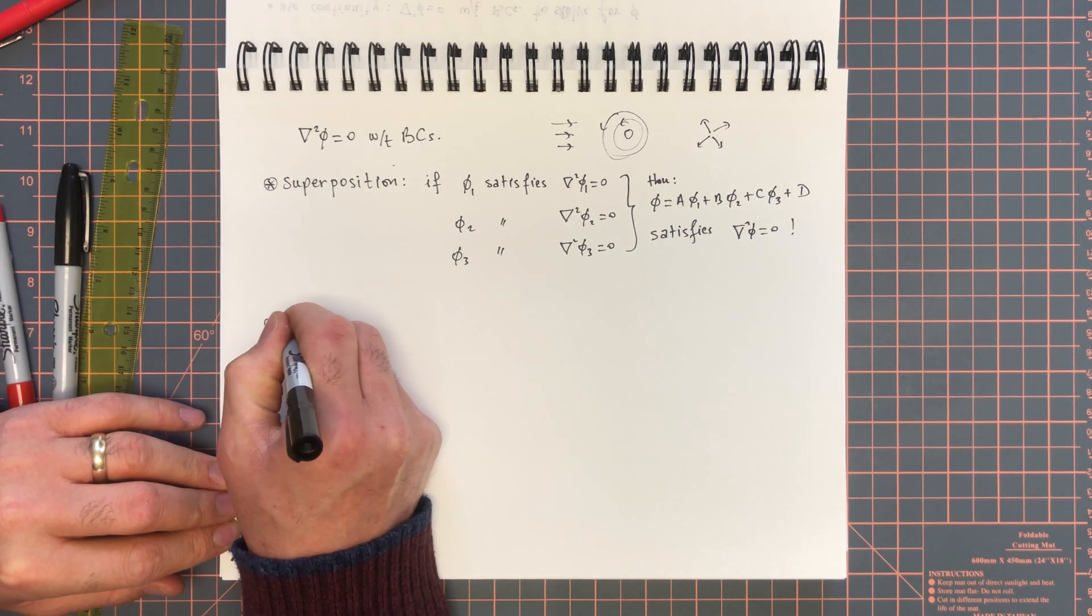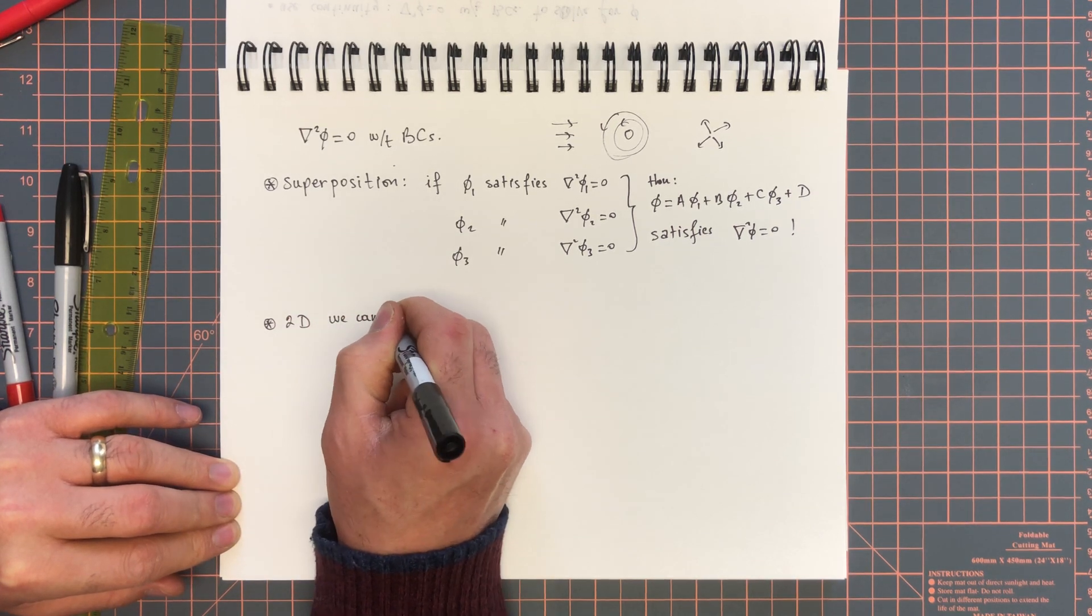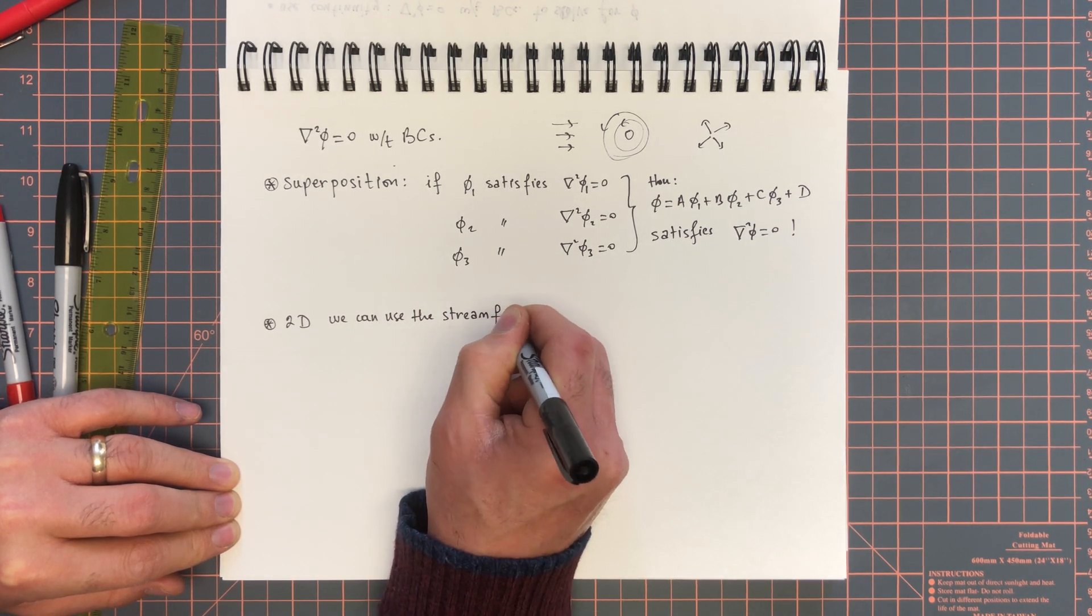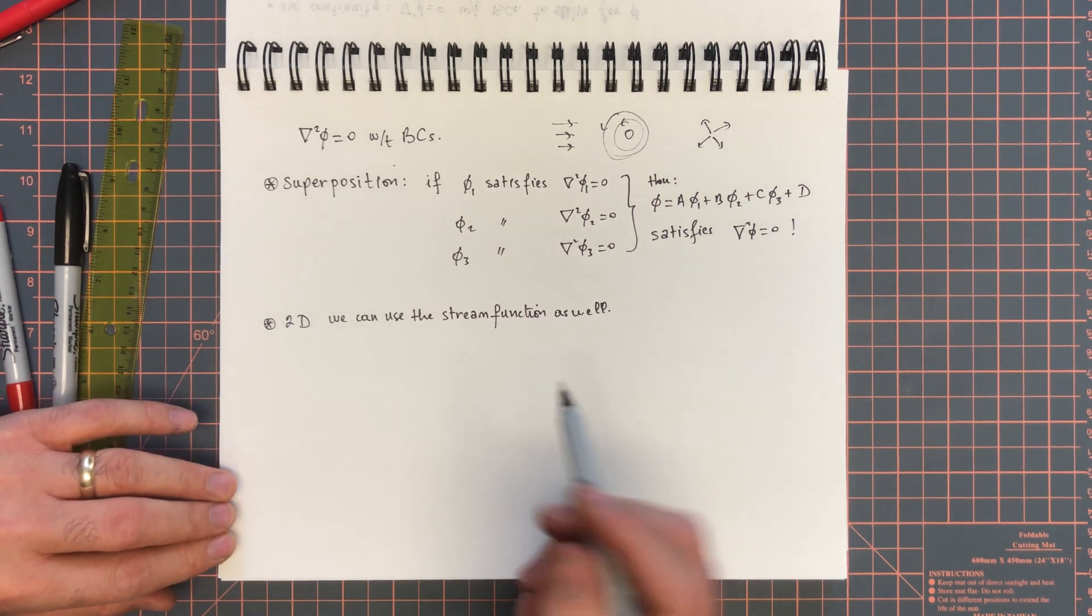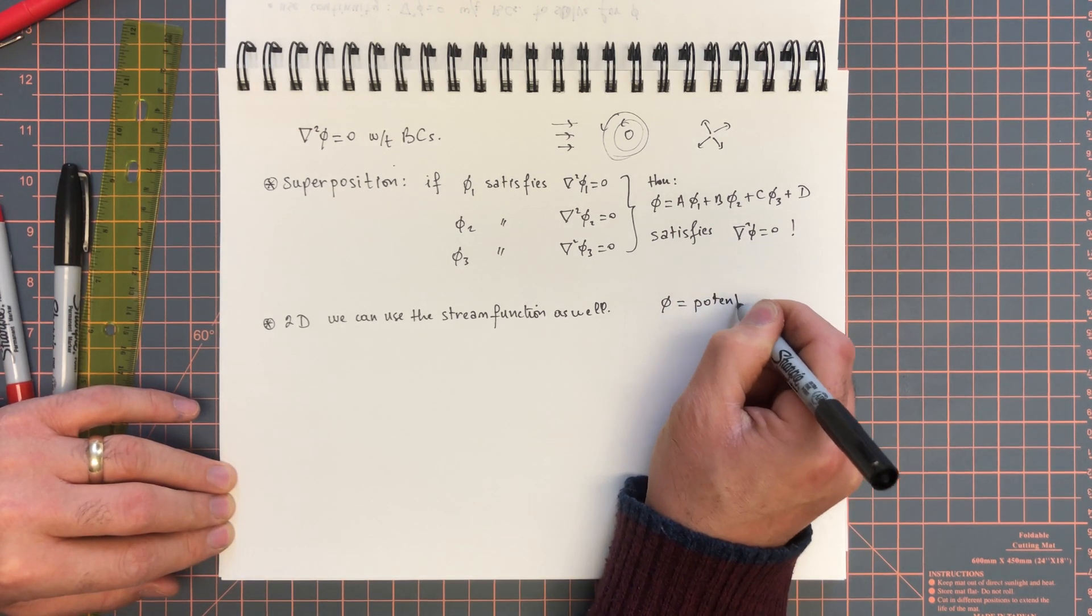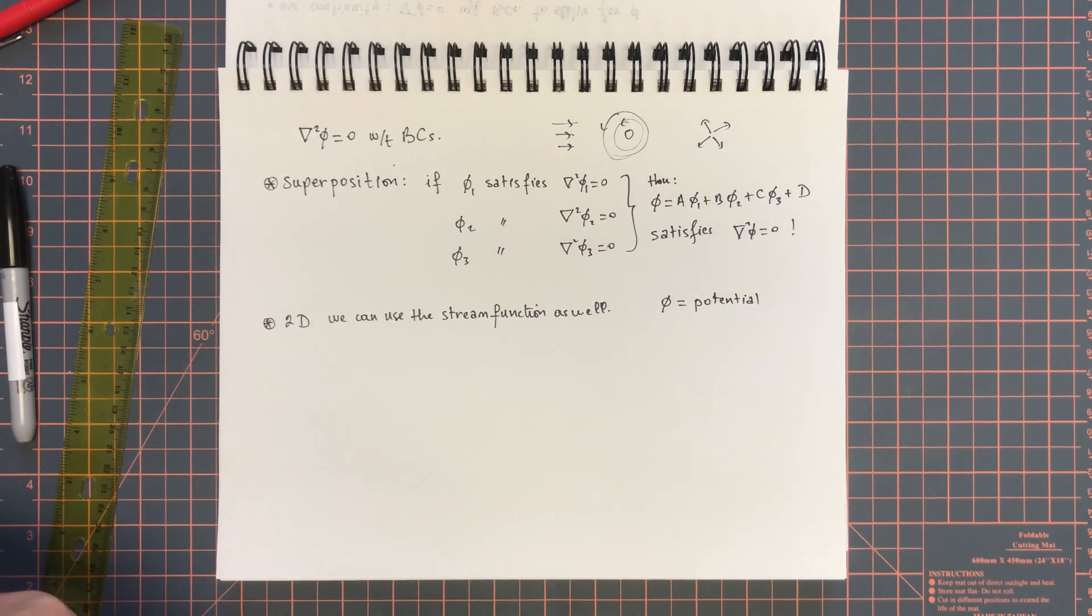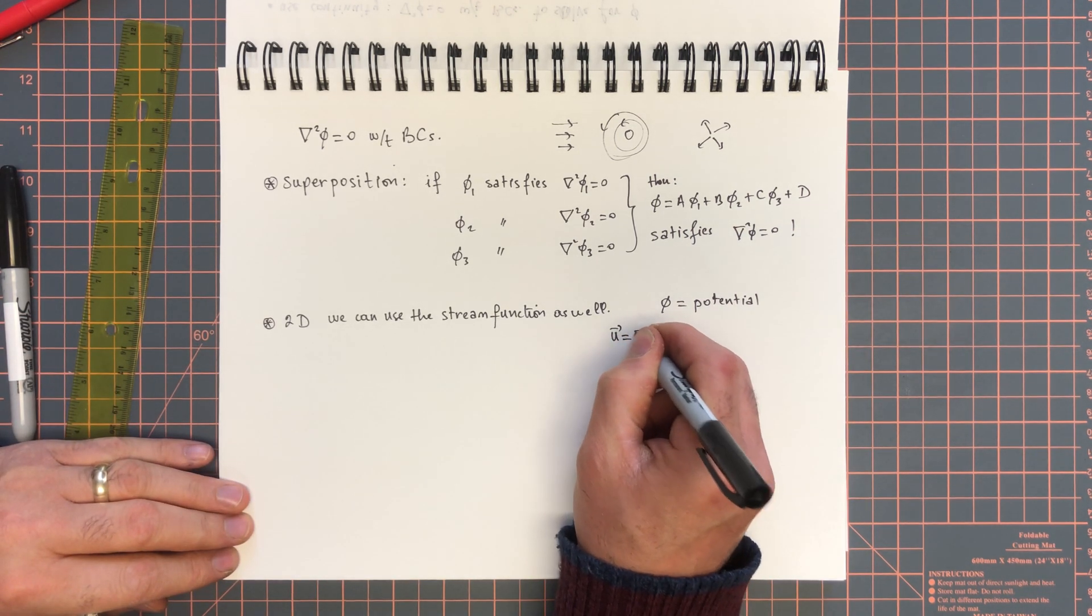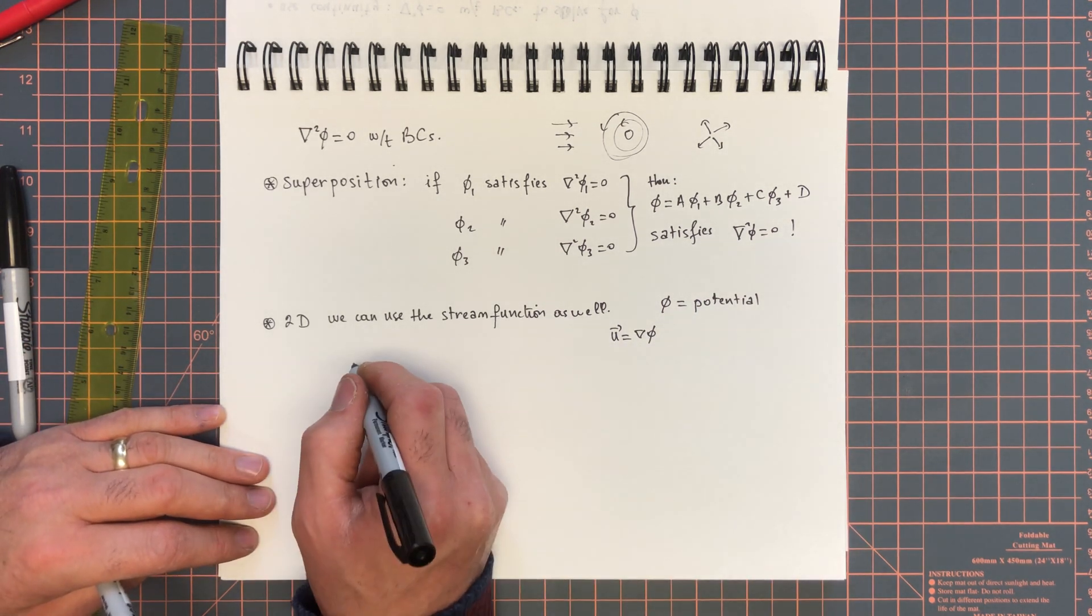If we limit ourselves to two dimensions, then we can use the stream function as well. The interesting thing about phi, which is called the velocity potential, is that it's not aligned with the flow. Rather, it's perpendicular to the flow because u is grad phi. Now, when you think about drawing a flow field, for example, if I'm asking you to draw the flow in this channel,